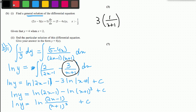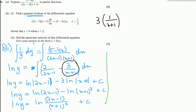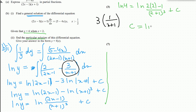Moving to part c, they ask for a particular solution given that y equals 4 when x equals 2. Substituting into the general equation: natural log of 4 equals natural log of 2 times 2 minus 1 over 2 plus 1 cubed plus c. Solving this gives c equals natural log of 36.